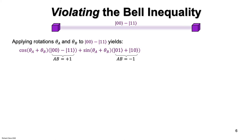So if after the two rotations are performed, the qubits are measured, the probability that AB is plus one is the cos squared of the sum of the two rotation angles, and the probability that AB is minus one is the sine squared of the sum of the two rotation angles.